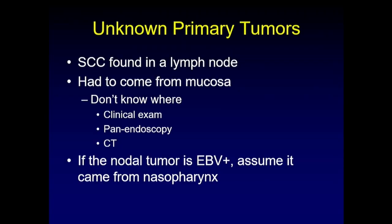A specific note on unknown primary tumors and the T0 classification: when squamous cell carcinoma is found in a lymph node as a neck mass — and clinical examination, panendoscopy, CT, and MRI cannot identify the primary — it is called an unknown primary. If that nodal sample is Epstein-Barr virus positive, the primary is assumed to have originated in the nasopharynx. Finding an EBV-positive node with no identifiable nasopharyngeal tumor on imaging constitutes nasopharyngeal carcinoma with T0 disease.